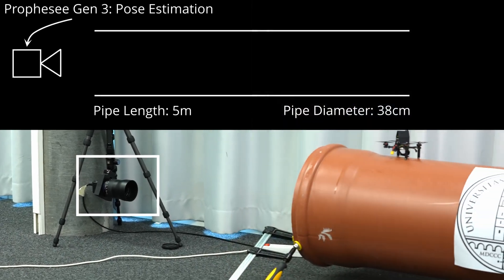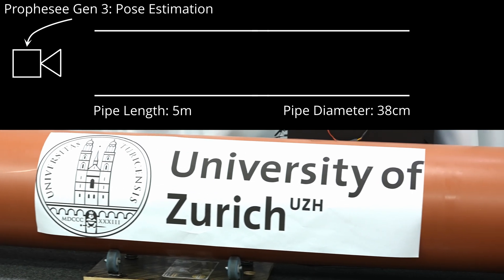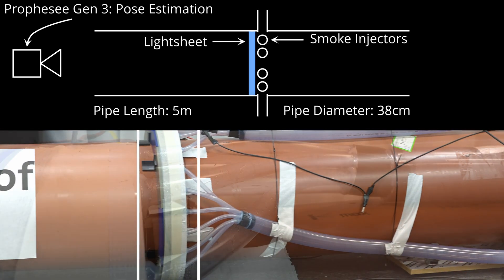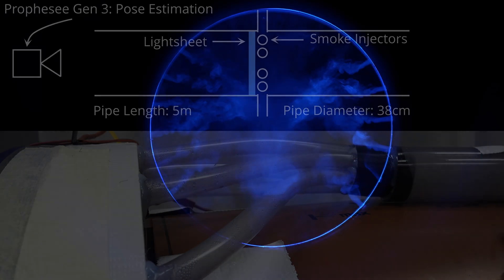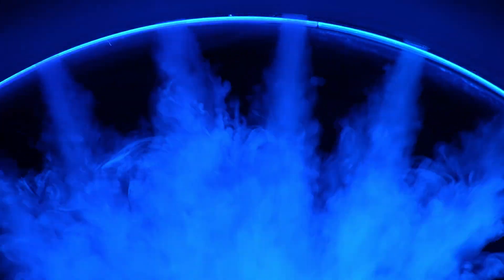For our experiments, we use a pipe that is 5 meters long and has a diameter of 38 centimeters. In the middle, our measurement location is equipped with 18 nozzles injecting smoke into the pipe. The smoke is lit up by a very bright LED light sheet, which we built using a circular slit aperture.